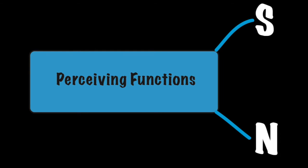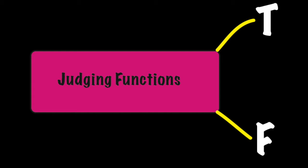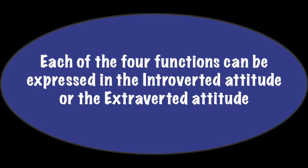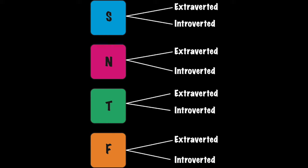We have two perceiving functions and two judging functions. Each of the four functions can be expressed in either the introverted attitude or the extroverted attitude. That is to say, they can either be kept in our inner world or presented to the external world.